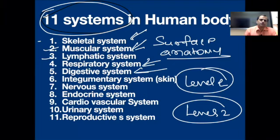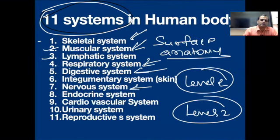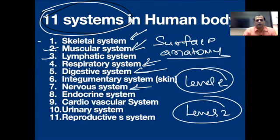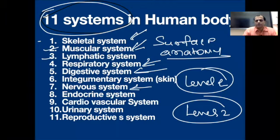This system is connected with skin diseases. Nervous system — we will talk about the nervous system. In the endocrine system, we are going to discuss diseases happening because of the imbalance in the endocrine glands, like the pancreas, like the thyroid.